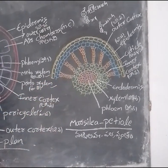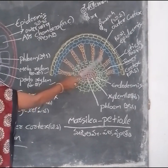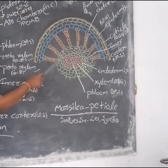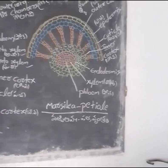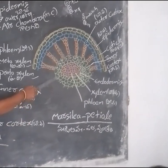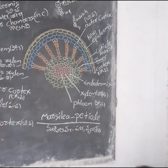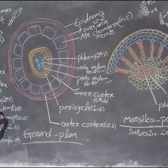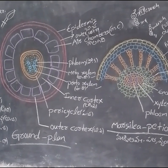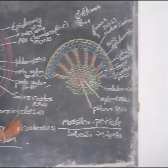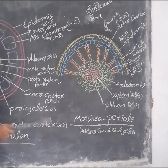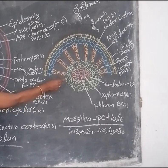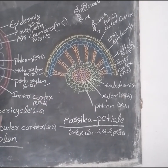The middle Cortex is made up of parenchyma tissue, and the inner Cortex is also made up of parenchyma. The outer layers are made up of parenchyma and the inside layers are also made up of parenchyma tissue, because parenchyma tissue stores food in these tissues. That's why inside tissues are formed with parenchyma.